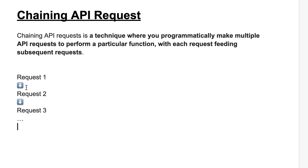So this is chaining. Here you can see request one — its output is dependent on request two. Request two cannot complete without request one, and request three cannot complete without request two. So there is a dependency, there is a sequence order. When request one executes, then request two, then request three — so it's called chaining API requests.